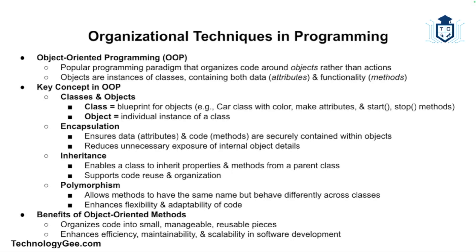Other key OOP concepts include encapsulation, which refers to keeping the data and the methods safe within an object and not exposing it unnecessarily. Inheritance allows a class to inherit properties and methods from another class, promoting code reuse. Polymorphism means objects can take on different forms — methods in different classes can share the same name but behave differently. Together, these OOP methods help organize programs into small, manageable, and reusable pieces of code.